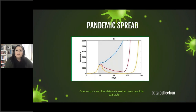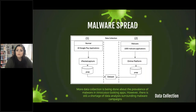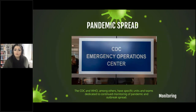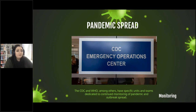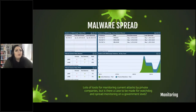With the current virus, we've seen a lot of open source and live datasets that are available — this is pretty unprecedented. We haven't had the technology to do this in the past during pandemic-level spread of viruses. More data collection is being done with the prevalence of malware in innocuous-looking apps. However, there's still a pretty big shortage of data analysis surrounding malware campaigns. With pandemic spread, there are dedicated entities — the CDC and WHO among others — that have specific teams dedicated to continued monitoring of pandemic and outbreak spread, providing constant information. With malware spread, there are a lot of tools for monitoring current attacks by private companies, but is there a case to be made for watchdog and spread monitoring on a government or even worldwide level?